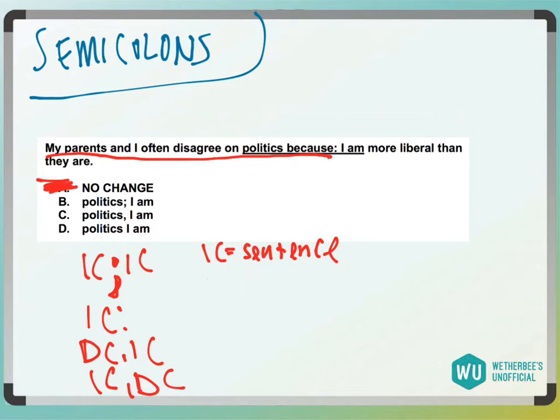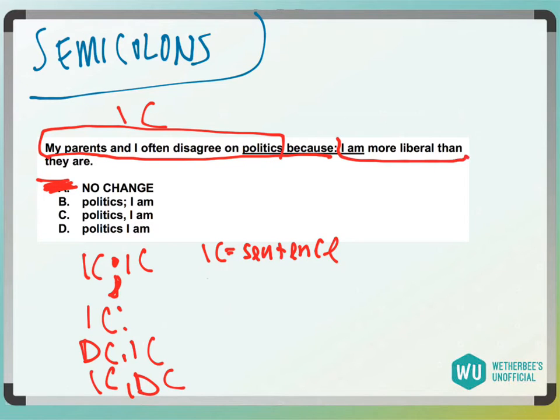Answer choice B: 'My parents and I often disagree on politics' — independent clause. 'I am more liberal than they are' — also an independent clause. So it's probably going to be B.